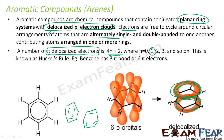In benzene there are three double bonds; one pi bond consists of two electrons, so three pi bonds give six pi electrons. Alternatively, benzene has six pi orbitals, each with one electron, again giving six pi electrons. The number of pi electrons must follow Hückel's rule: 4n+2, where n can be 0, 1, 2, 3, and so on.